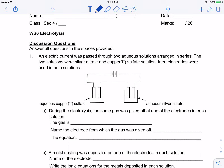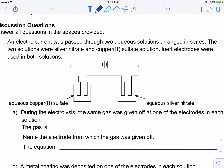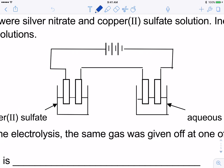This is the screencast for worksheet six on electrolysis. Let's look at the first question: an electric current is passed through two equal solutions arranged in series. The two solutions used are copper(II) sulfate and silver nitrate, using inert electrodes for both. Let's analyze the diagram first. Remember that the long line of the battery symbol is the positive terminal and the short line is negative.